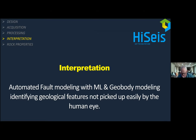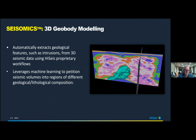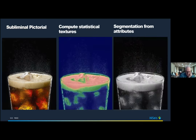Now we get to the crux of where a lot of recent work has gone: the interpretation side, with automated fault modeling and geobody modeling. Starting with what we call SeismicS geobody modeling — it builds on technology established in the medical imaging field. Seismic and medical imaging have a lot of co-existing technology that swings between both domains. Effectively it's a way of looking at textures within the seismic domain that are hidden from the human eye.